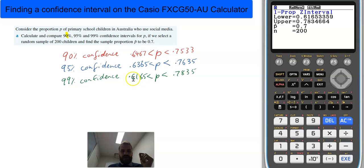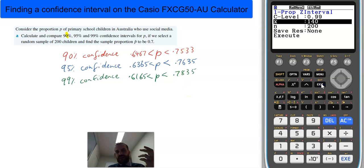If we only want to be 90% confident, it's a smaller bound. It's between 64.6% and 75%. But this video is really just about using that calculator.